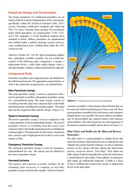Main Parachute Canopy. The main parachute canopy is used in conjunction with a reserve parachute assembly as the primary parachute canopy for a premeditated jump. The main canopy consists of everything from the main riser connector links to the bridal attachment point, excluding the steering toggles. The major parts are the suspension lines and the canopy. Reserve Parachute Canopy. The reserve parachute canopy is worn in conjunction with a main parachute used for premeditated jumps, consisting of everything from the reserve riser connector links to the bridal attachment point, excluding the steering toggles. The major parts are the canopy, suspension lines, and any type of deployment device sewn to the canopy or lines.